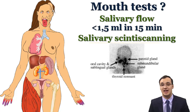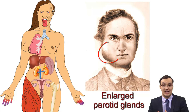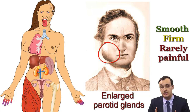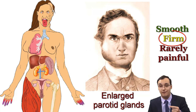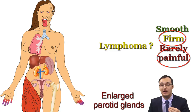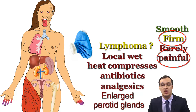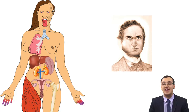Patients may also present with enlarged parotid glands, which are smooth, firm, and rarely painful unless there is obstruction or infection. If the parotid glands are persistently firm, we need to rule out lymphoma. If painful with infection, we apply local wet heat compresses, antibiotics, and analgesics. We must consider other diseases causing enlarged parotid glands and make a differential diagnosis.